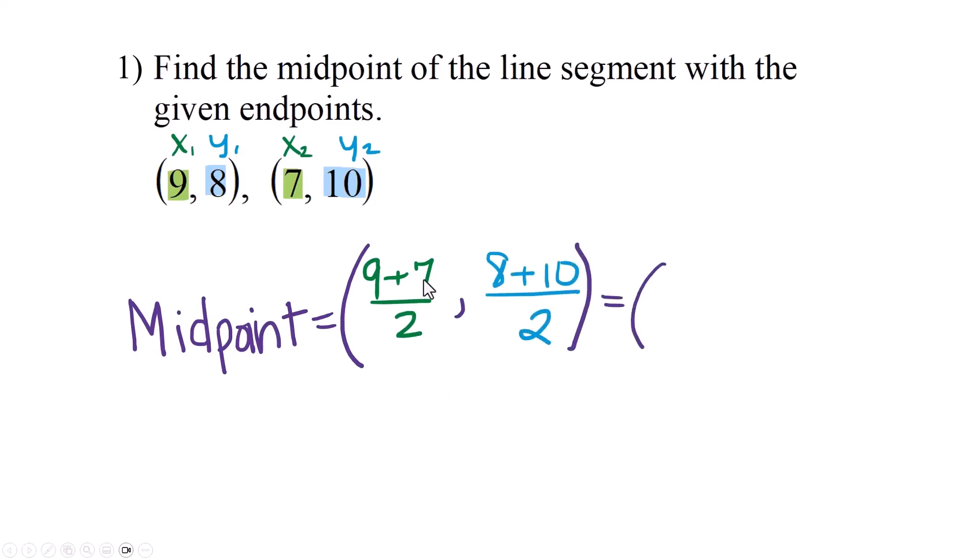Simplify this. 9 plus 7 is 16 divided by 2, so that would be 8. 18 divided by 2 would be 9. And there's our midpoint. The formula rocks if you really get it. It's just that when you see it on paper, it looks very intimidating.